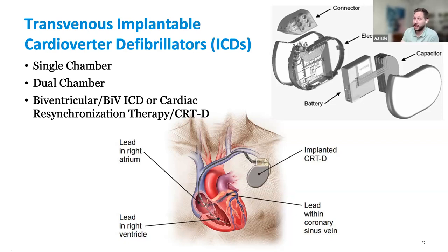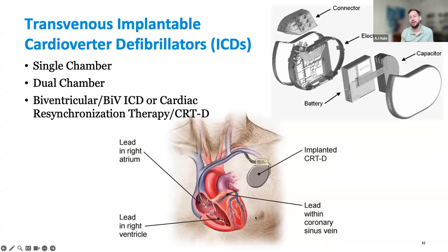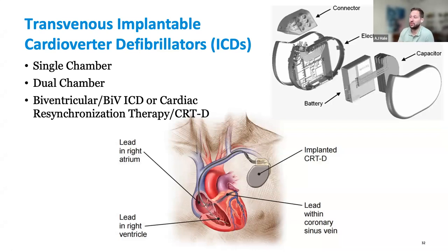Defibrillators come in single chamber and dual chamber. This one is a CRT — you have your RV lead, your RA lead, and your coronary sinus lead as well, fed down to pace the other side of the heart. The idea is to engage as much tissue as possible and alleviate the dyssynchrony that the patient may have with their electrical conduction system.